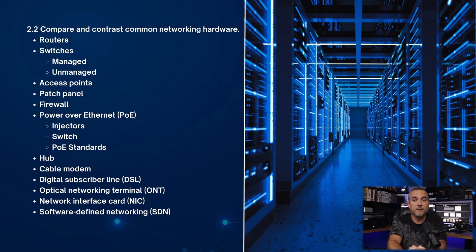Network hardware refers to the physical components used in computer networking to connect devices and facilitate communication. Examples include routers, switches, modems, network interface cards, and cables. The purpose of network hardware is to establish and maintain connections between devices, manage data traffic, and ensure smooth communication within a network. Each type plays a specific role in enabling devices to communicate and access shared resources such as the internet and printers.